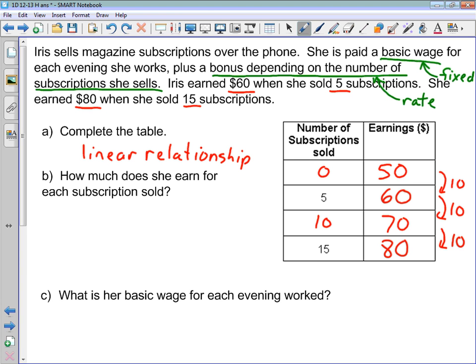So just filling in this table, we sort of answered part B here. How much does she earn for each subscription sold? She earns $10, her earnings go up by $10 every time her subscriptions go up by 5. So she earns $10 for 5 subscriptions. $10 for 5, how much does she earn for each one? Well, $10 divided by 5 is going to give us $2 for each one. So we can say $2 each.